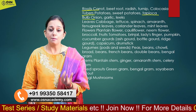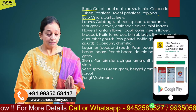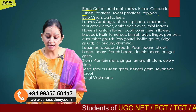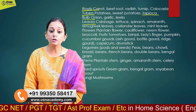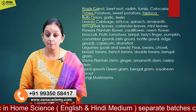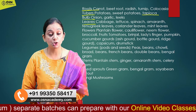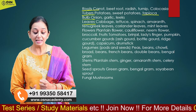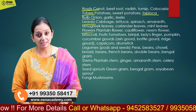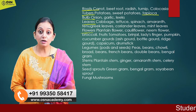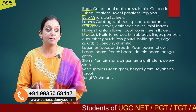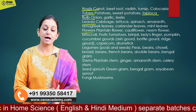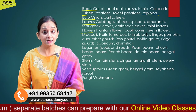Bulbs are the next category. Then we have leaves — leafy vegetables such as spinach, Brussels sprouts, amaranth, fenugreek, coriander, and mint leaves. After leaves, flowers can be categorized separately. Flower vegetables include cauliflower and broccoli. These are all flower vegetables.